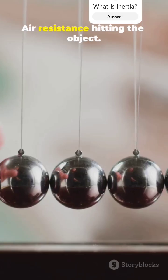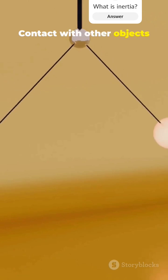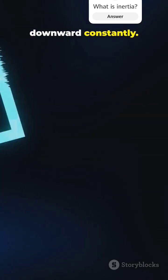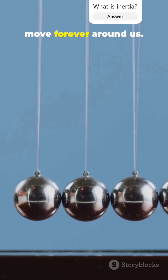Small forces add up. Air resistance hitting the object. Contact with other objects stops movement. Gravity pulls objects downward constantly. These are why things don't move forever around us.